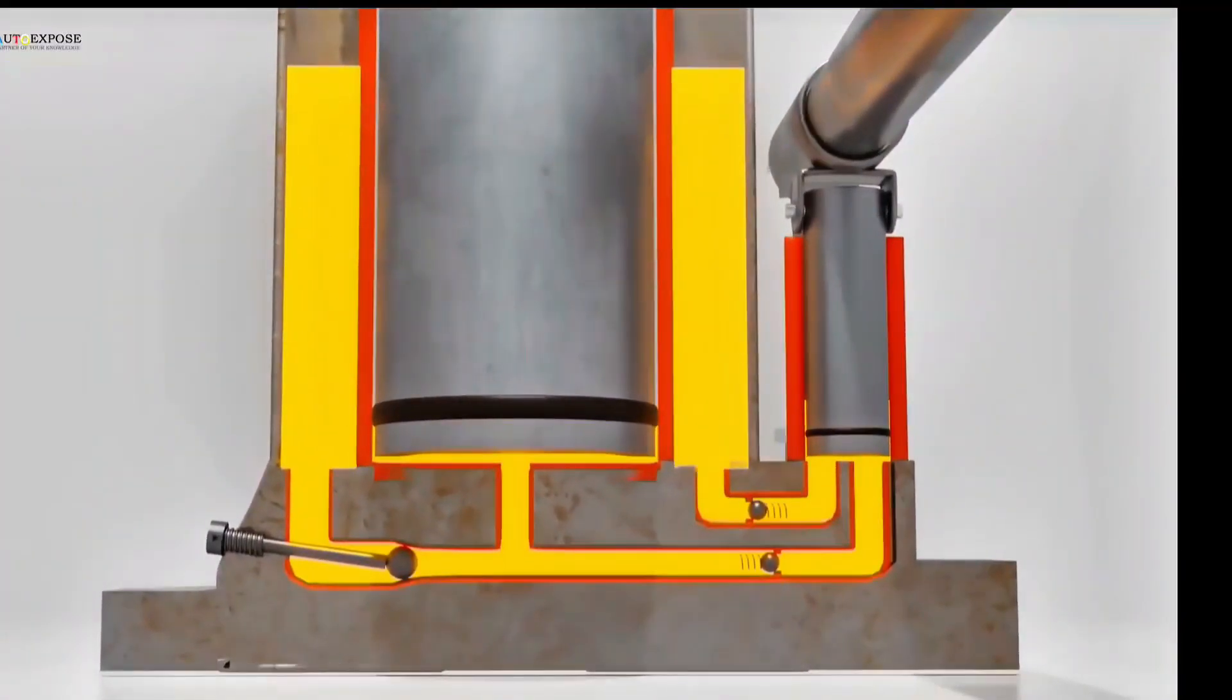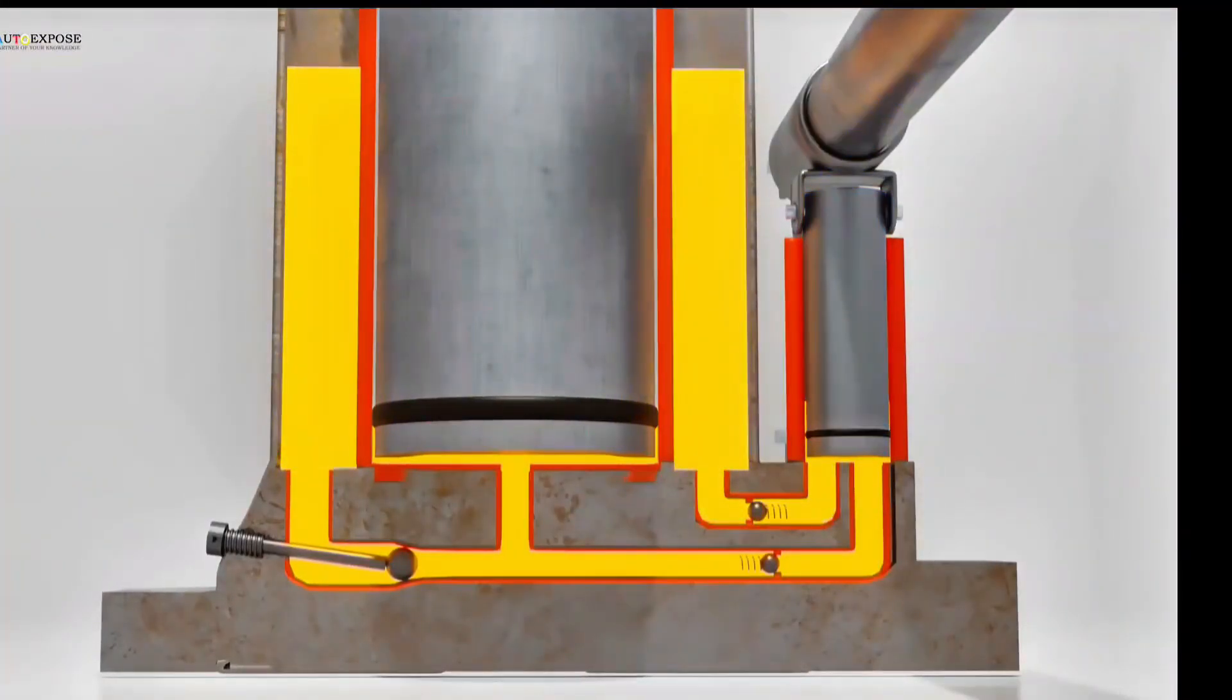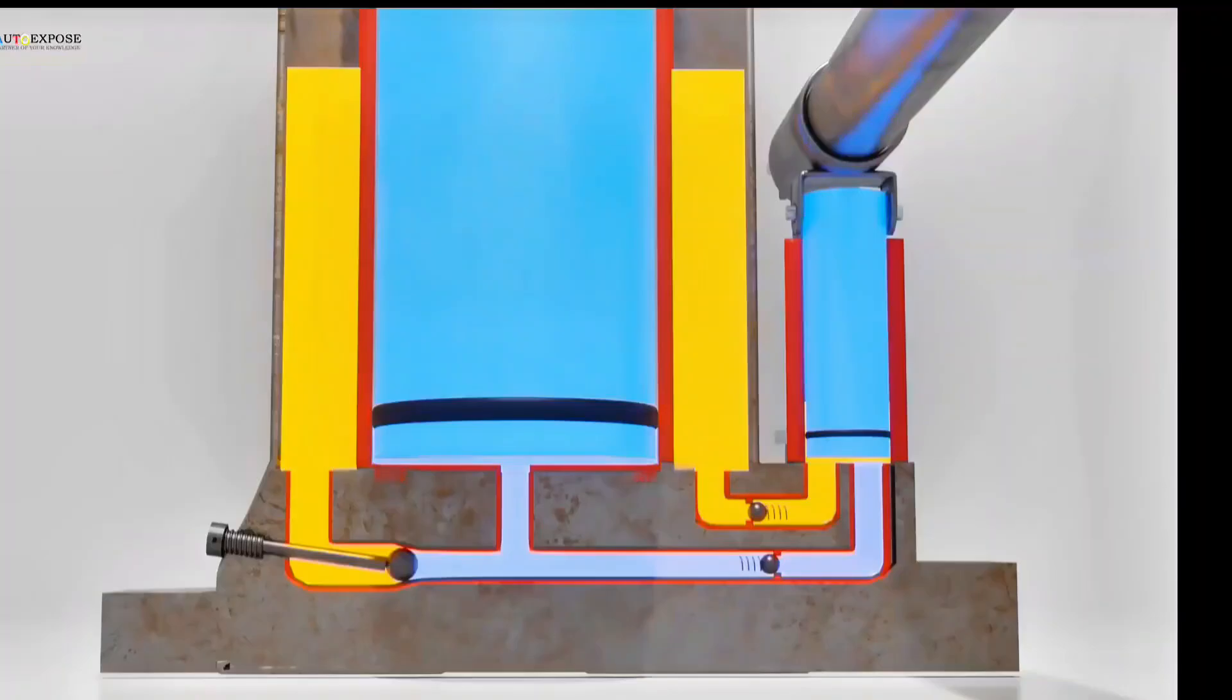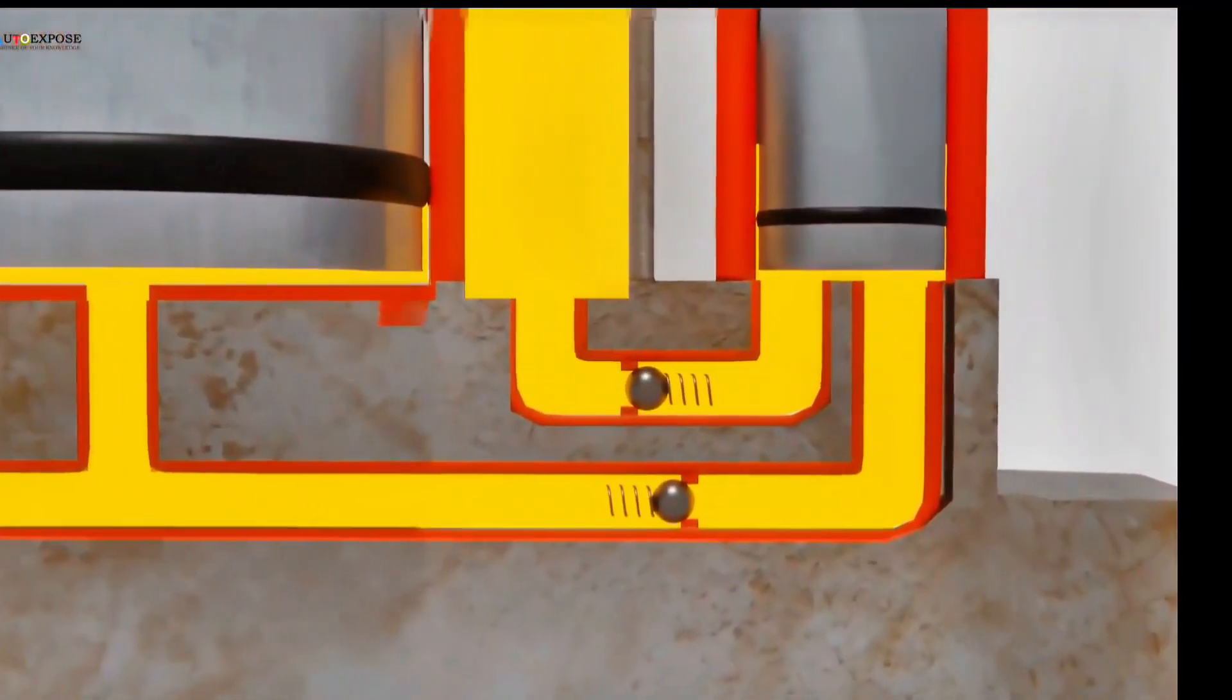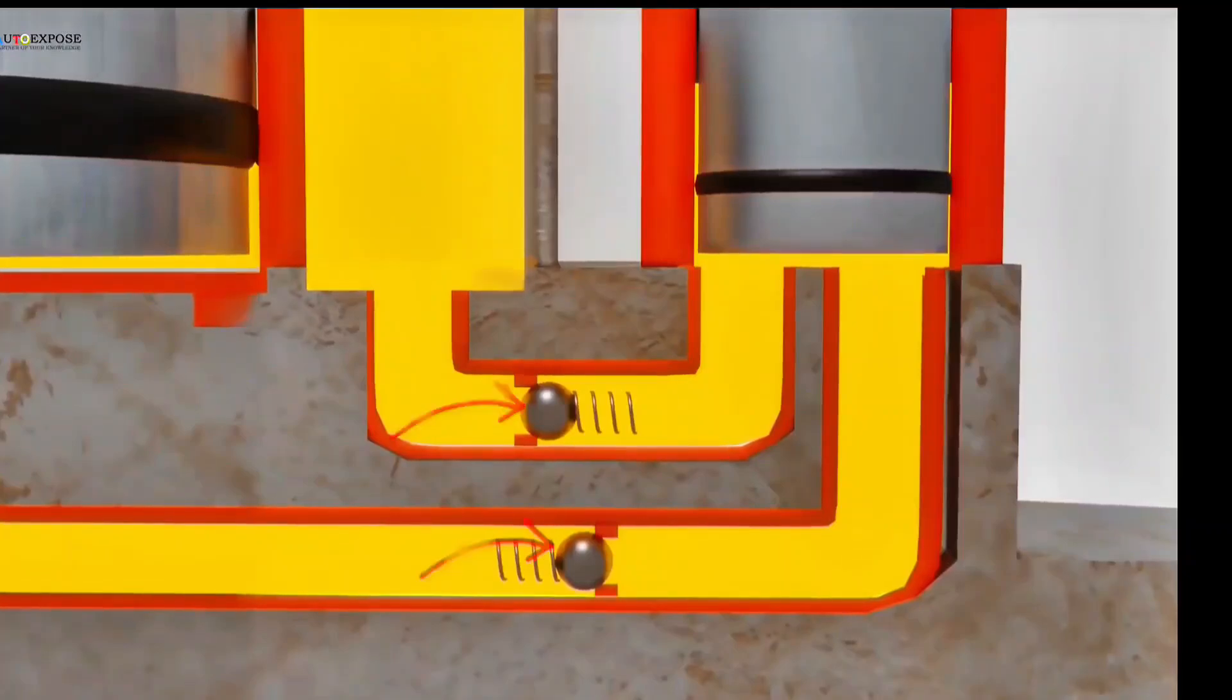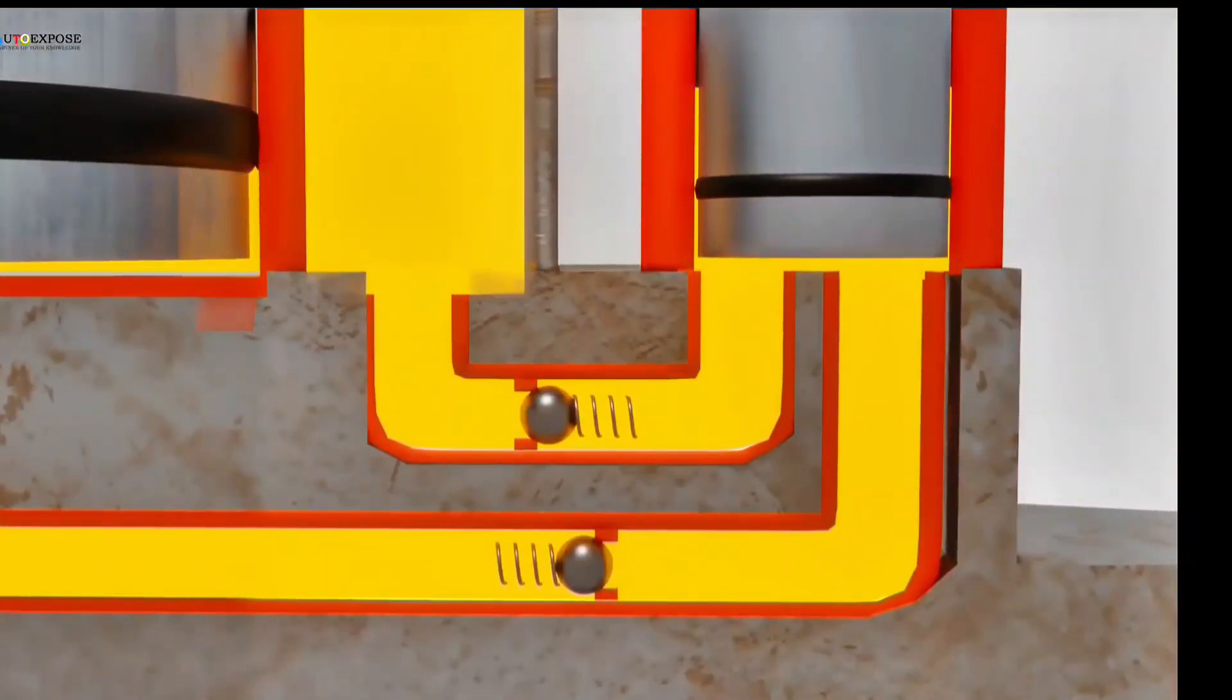At the bottom, there are two channels. The first channel connects the reservoir to the input cylinder. The second channel connects the input cylinder to the output cylinder. In the middle of each channel, there is a one-way valve. This valve only allows fluid to flow in one direction, not back and forth.